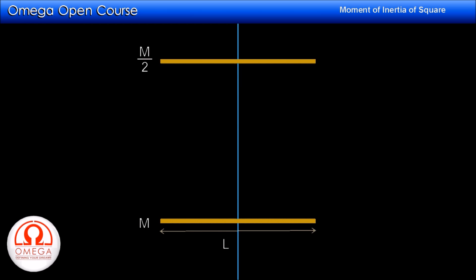Suppose we make the mass of both these rods half its original value. Then the mass of each rod is M/2 and the mass of the entire system is M. The moment of inertia is now 2 × 1/12 × M/2 × L². Simplifying, we get 1/12 ML².